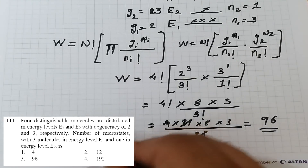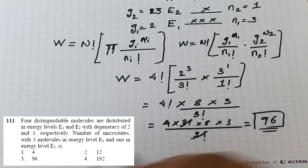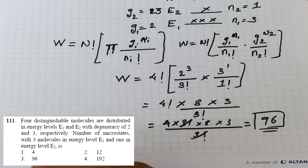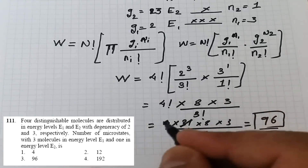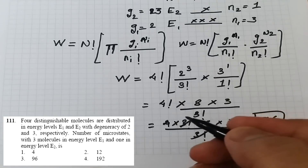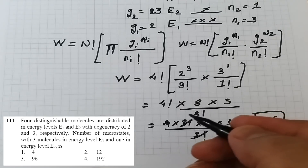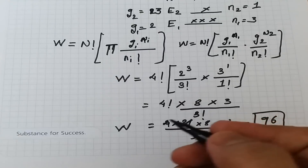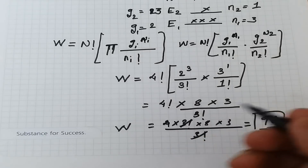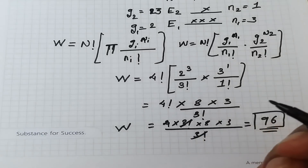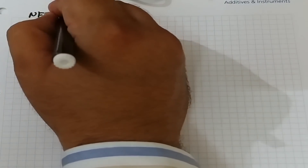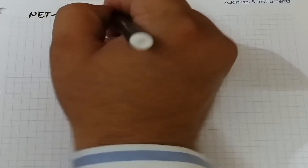Options 4 and 12 are very low numbers and clearly not the answer, but in CSIR NET I wouldn't suggest guessing — always solve it properly. Moving on to the next numerical from CSIR NET June 2017, again for four marks.